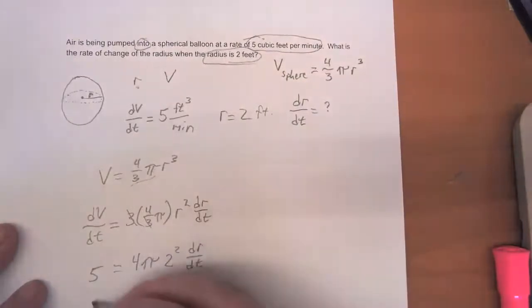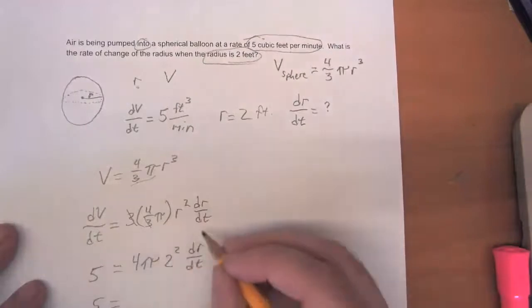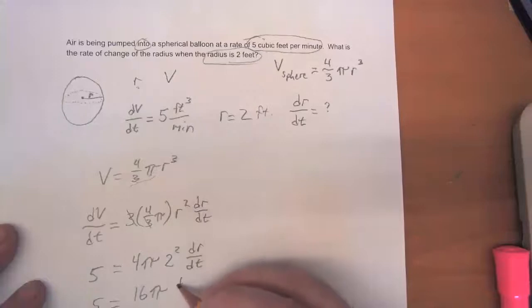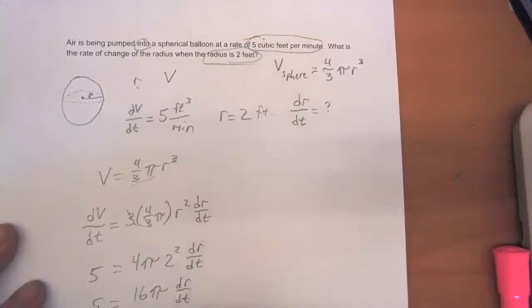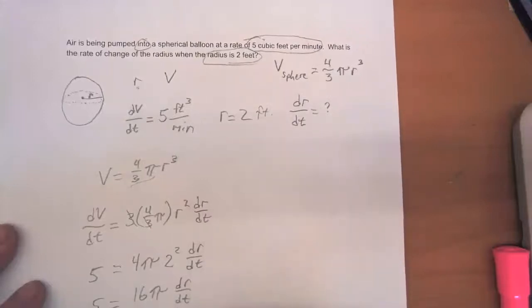So four times that's four times two squared. Four times four is 16 pi dr/dt. And we divide both sides by 16 pi. And we get that dr/dt is equal to five over 16 pi.